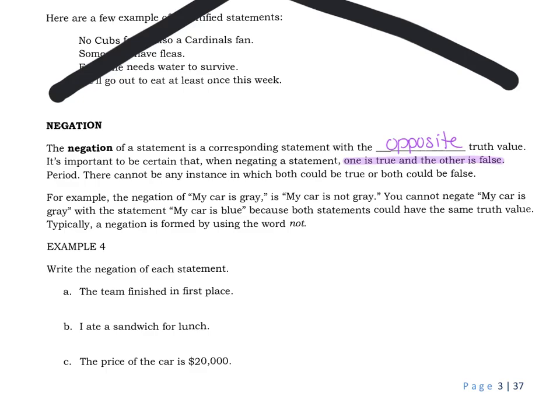That is not a negation if you make that happen. So let me give you an example. If you said the negation of my car is gray is my car is not gray, that would be right because if your car is gray, that's true. And then if you said my car is not gray, and your car was gray, then saying my car is not gray is false.